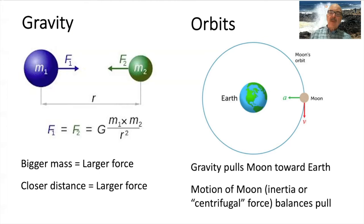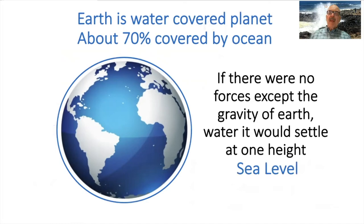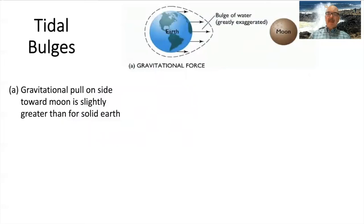Gravity pulls the moon toward the earth; the motion of the moon — we can call it a centrifugal force — balances the pull. Now, the earth is covered with a lot of water. The oceans cover about 70% of the planet. If we had no forces except gravity of the earth and no other forces, it would settle at one height, and we'd call that sea level. But we have a lot going on; the main thing causing our tides is the moon. The moon pulls on the water, and because the moon is a little closer to the water on the side toward the moon, it pulls that out a little bit. So we have a bulge — not huge, a couple of feet, maybe 10 feet or a few meters.